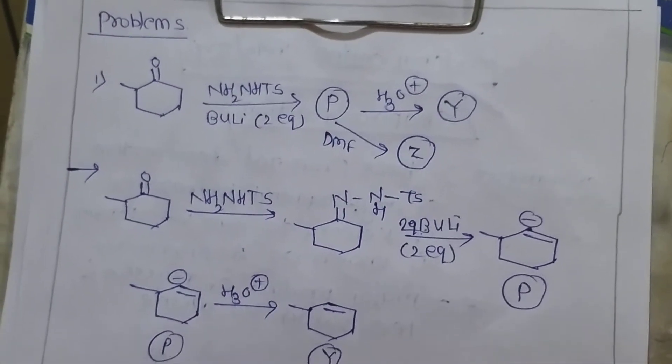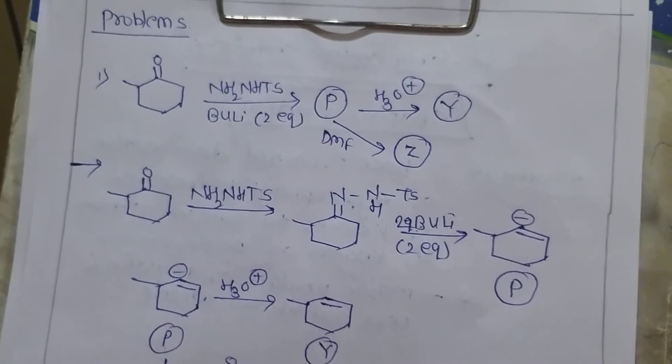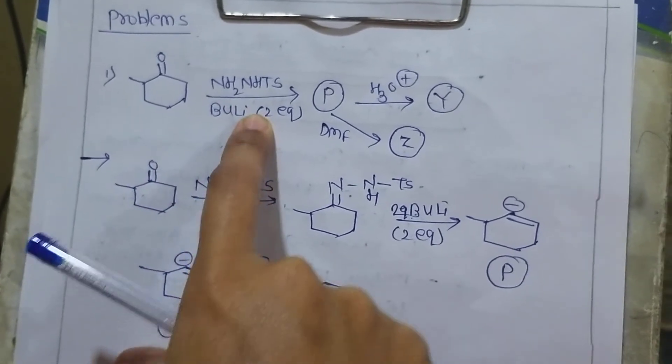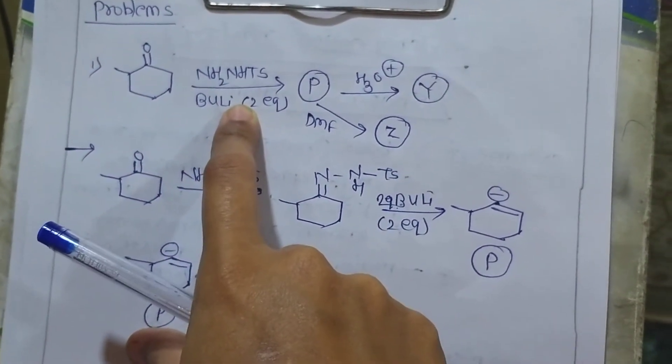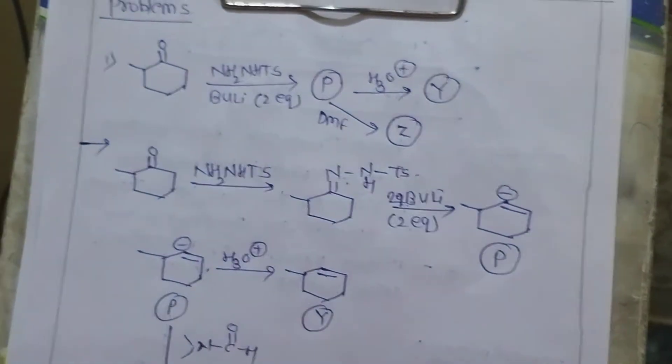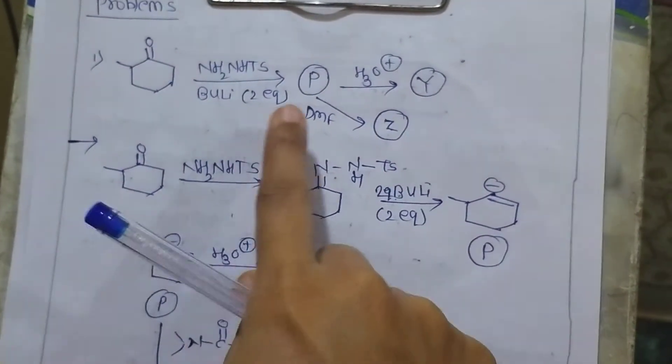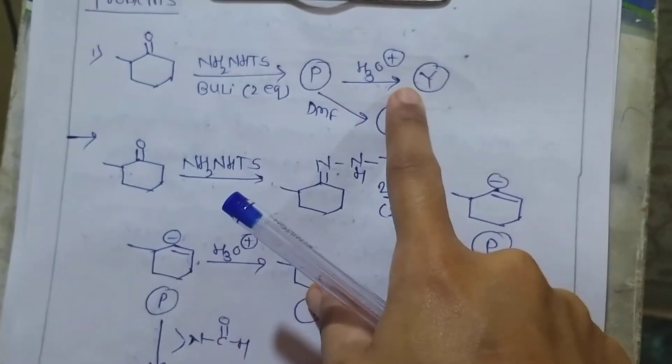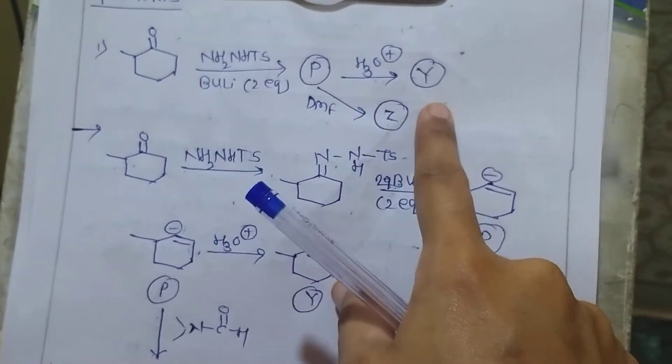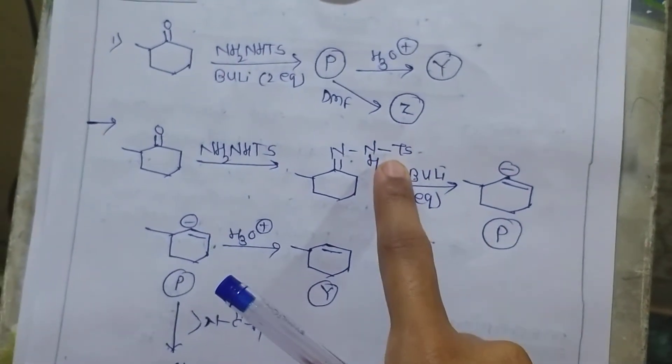If we talk about problems, let us consider one ketone. It is reacted with NH2-NHTS and two equivalents of butyllithium. It will give product P. P again reacts with DMF as well as hydrolysis. It will give products X, Y and Z respectively.